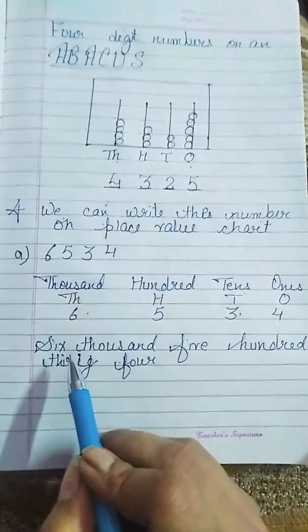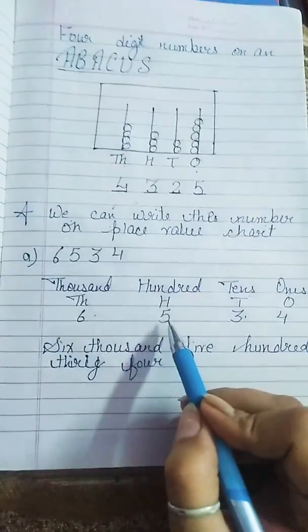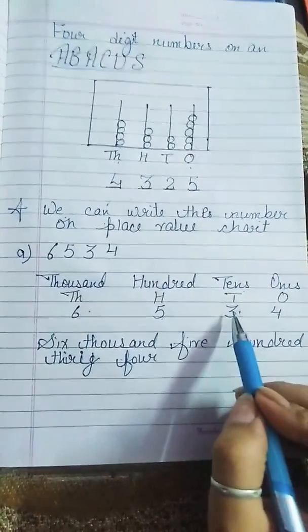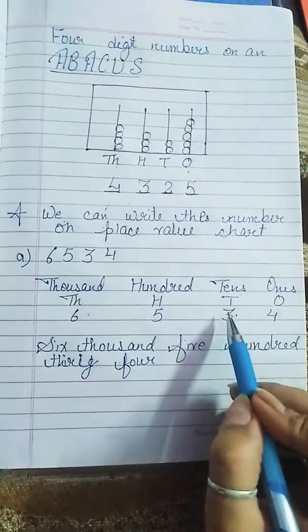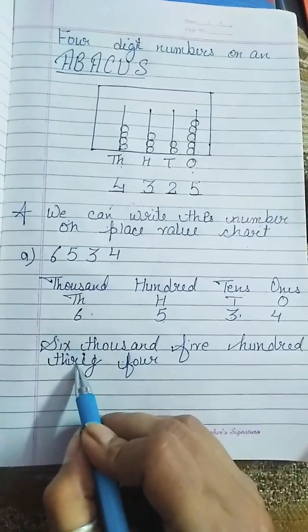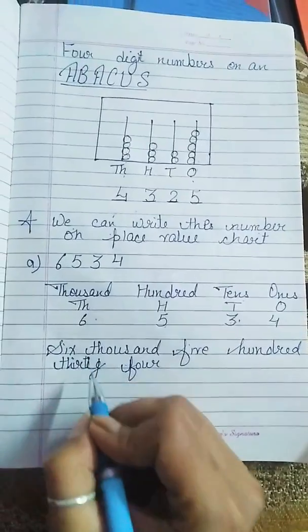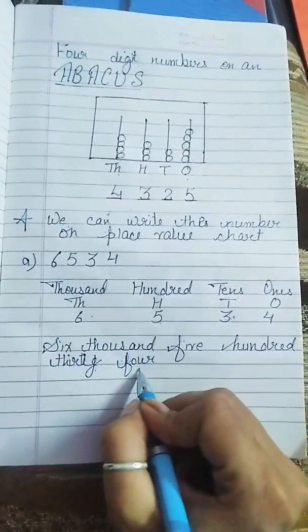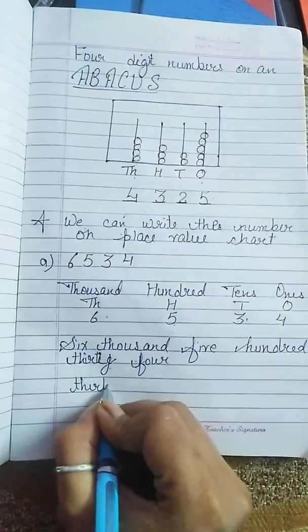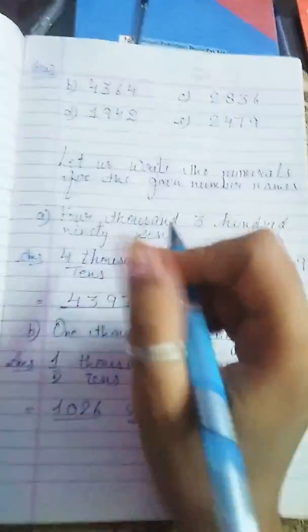Agar it's a spelling aapko liekhna hai hai, toh kaisa liekhoga hai? Six thousand, five hundred, thirty, T-H-I-R-T-Y, thirty four.